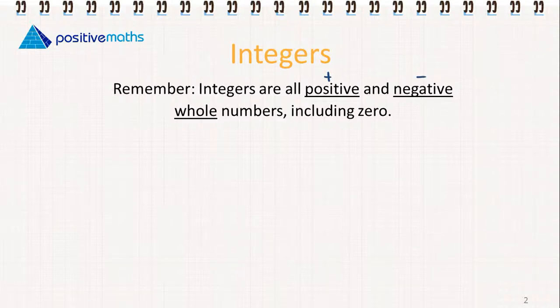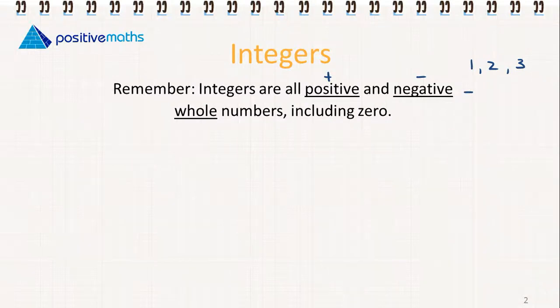When we're talking about whole numbers, it means, for example, that they're 1, 2, 3. If we have negative numbers, it could be minus 1, minus 2, minus 3. We're not including fractions, and we're not including any numbers with a decimal.